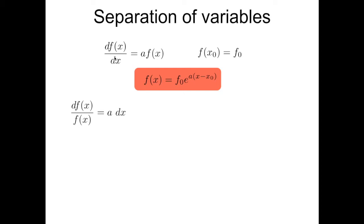So here you will see that I've been abusing the notation, considering the sign of derivative df over dx like a ratio. This might be correct before taking the limit for the delta x that goes to zero, and result in this equivalence: df divided by f on the left-hand side, and then a times dx on the right-hand side.